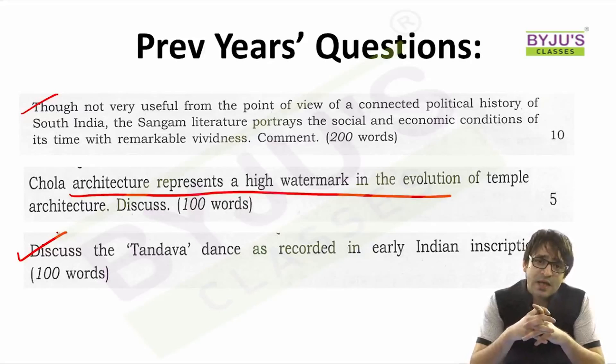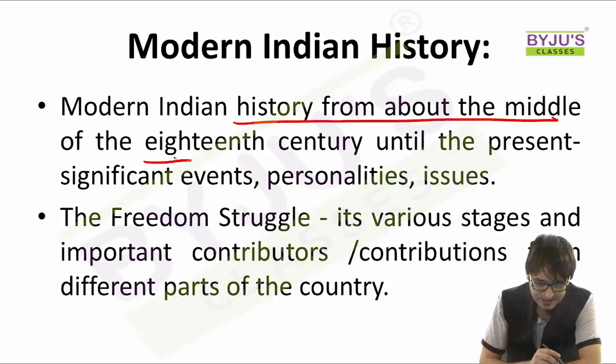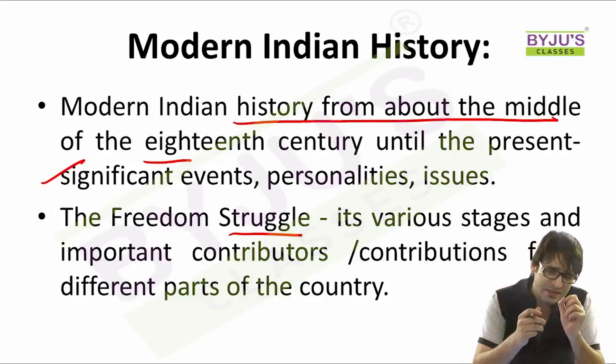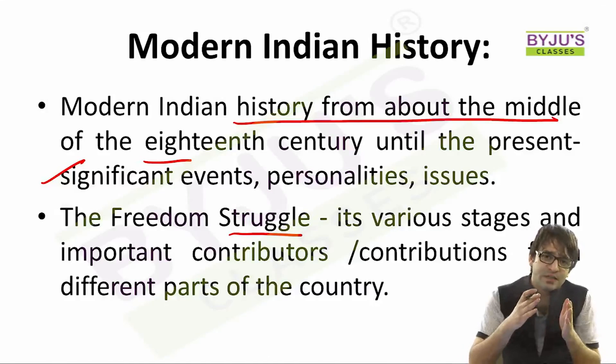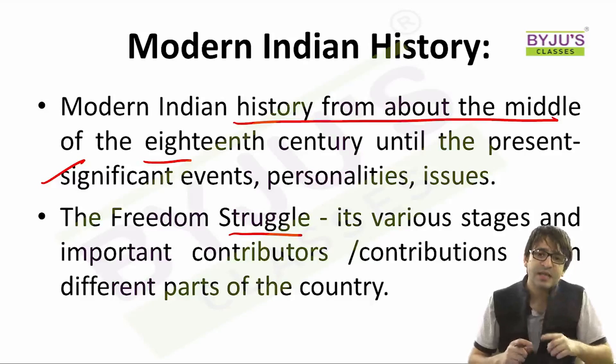Apart from Indian art and culture, the history syllabus also talks about modern history. The syllabus covers modern Indian history from about the middle of the 18th century until the present — significant events, personalities, issues, the freedom struggle, its various stages, and important contributors from different parts of the country. Modern history, taking the period from 1707 to 1947 or 1857 to 1947, is the most easiest part of your syllabus, for the single reason that you have read this for your prelims preparation.